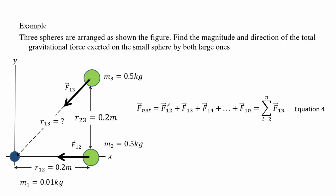Here we have an example of multiple masses. Three spheres are arranged as shown in the figure. Find the magnitude and direction of the total gravitational force exerted on the small sphere, mass m1, by both large ones, mass m2 and mass m3.